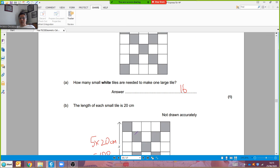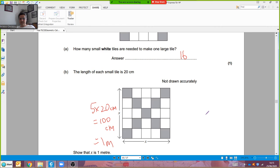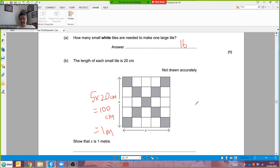The length of each small tile is 20 centimeters. I want to prove that x is 1 meter. Well I've got 5 times 20 which is 100 centimeters that equals 1 meter. One of you wrote down 100 divided by 20 equals 5. That doesn't help because I want to arrive at the answer of 100 centimeters and then say that equals a meter.